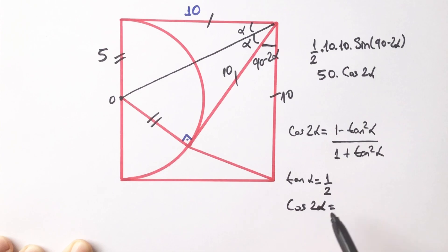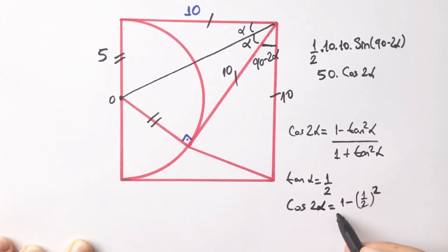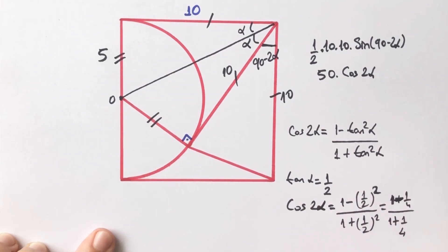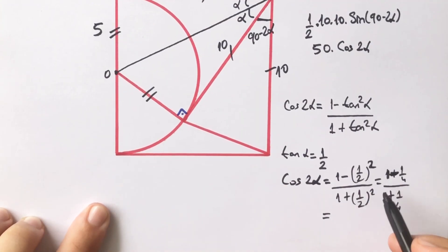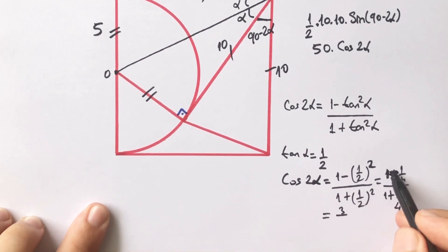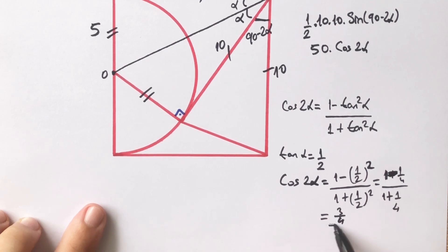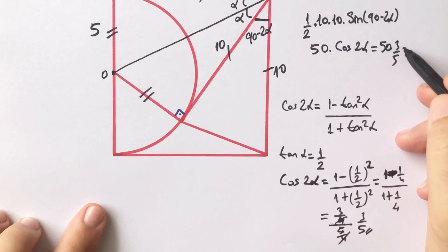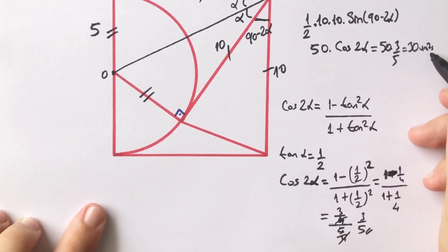So cosine(2α) equals (1 minus (1/2)²) over (1 plus (1/2)²), which is (1 minus 1/4) over (1 plus 1/4), giving (3/4) over (5/4). Therefore cosine(2α) equals 3 over 5. The area equals 50 times 3 over 5, so the area is 30 square units.